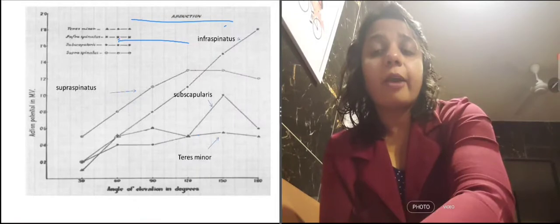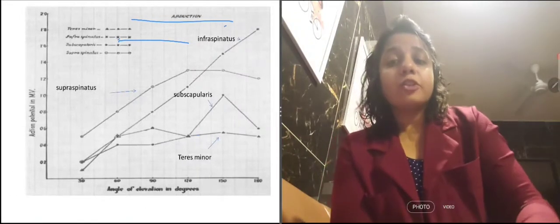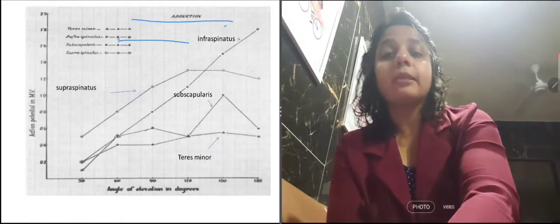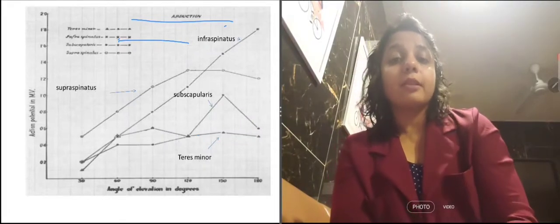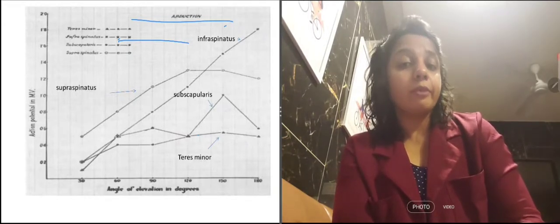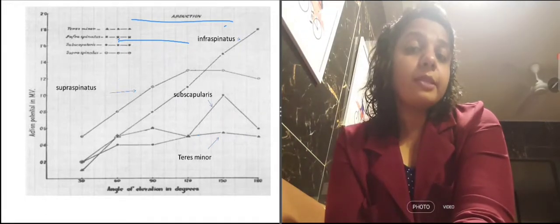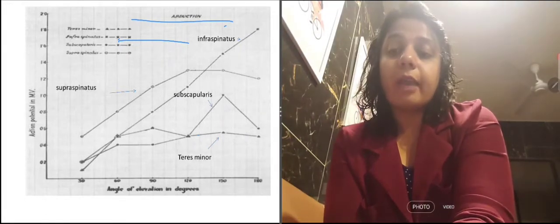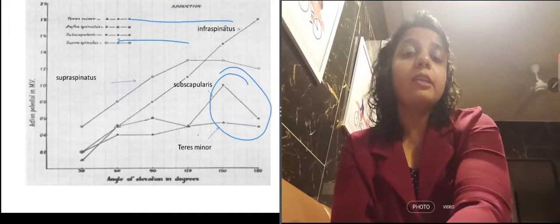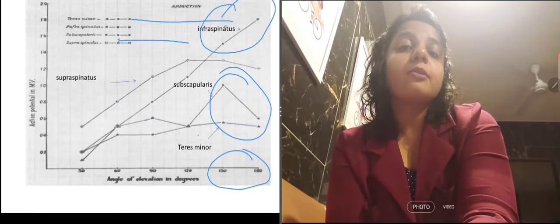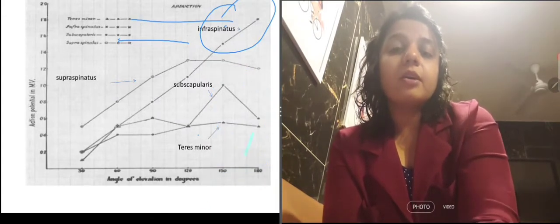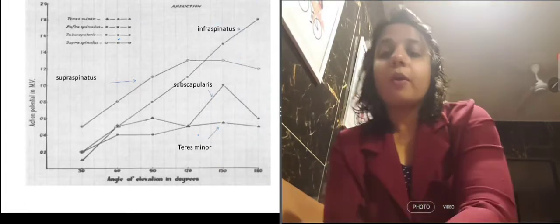In this picture, the horizontal axis shows degree of elevation and the y-axis shows external potential. External potential rises when we start doing abduction — we can see this in the supraspinatus, infraspinatus, and subscapularis muscles. However, when we do 150 to 180 degrees of abduction, you can see the external potential of the subscapularis is declining — I will mark it here. But in the infraspinatus, it is still rising. This is the difference between the infraspinatus and subscapularis muscles shown here.